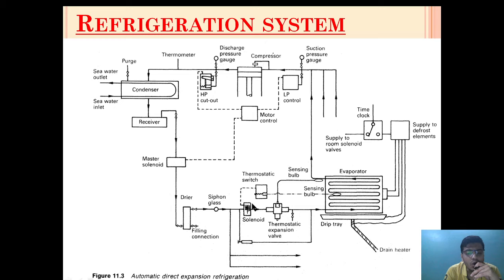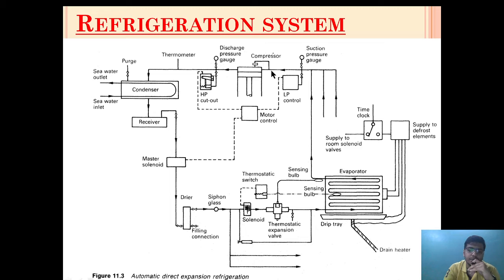Through the sight glass, the refrigerant will pass through a thermostatic expansion valve, which converts it from a high pressure liquid refrigerant to a low pressure liquid refrigerant. As it enters the evaporator, it will extract the heat from the refrigerated area, and as it boils off, it will convert into gas form and go again to the compressor suction.